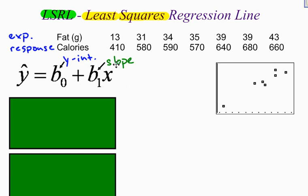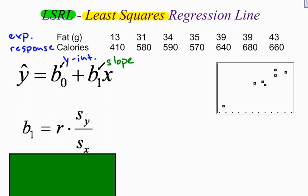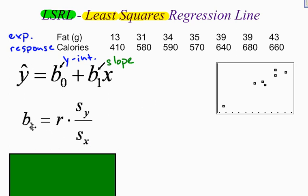Let's start off by looking at the slope, b sub 1. What is the formula for finding b sub 1? We take r — our correlation coefficient — and multiply it by s sub y divided by s sub x, which are our standard deviations. You've got to know your notation: r is the correlation coefficient, s is the standard deviation. So we want the standard deviation of the y variable on top and the standard deviation of the x variable — the explanatory — on the bottom.